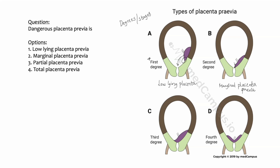Third degree placenta previa is when the placental edge rolls over the internal os, partially covering it — we call this partial placenta previa. Fourth degree is when the internal os is completely covered by the placenta and the placenta crosses over it, also present on the lower uterine segment of the opposite side — this is total placenta previa. So the four types are: low lying, marginal, partial, and total.